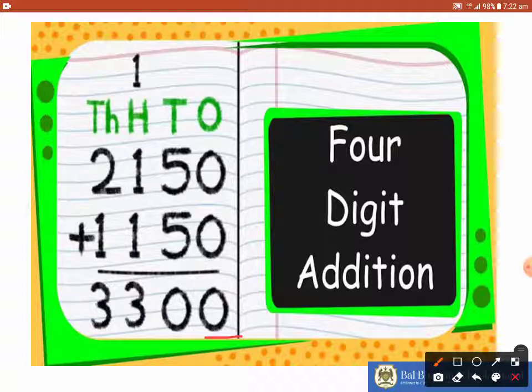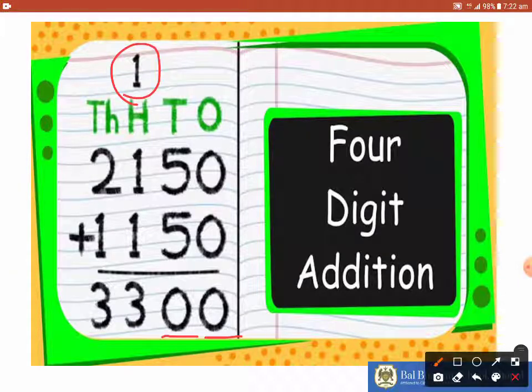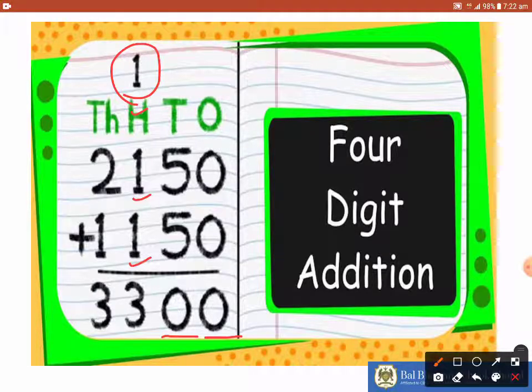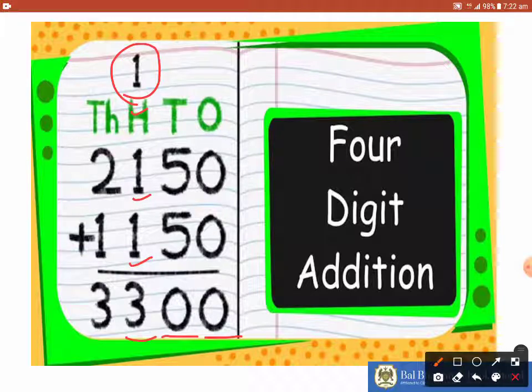5 plus 5 gives you 10. Now in this case, we have to write 0 at the bottom and 1 on the top. Now we are going to add this 1 to the remaining numbers on this place. That is 1 plus 1 plus 1 plus 1 that gives you 3 and 2 plus 1 is definitely 3 only.